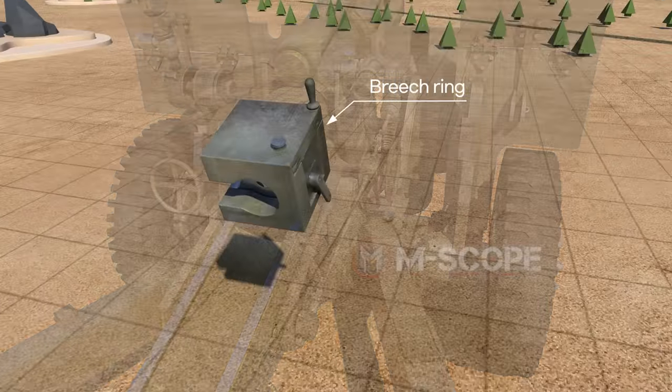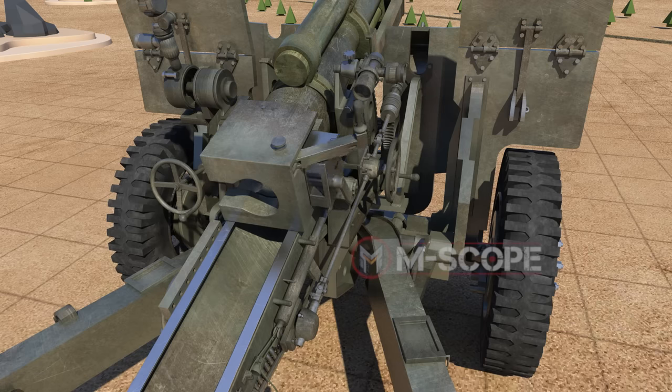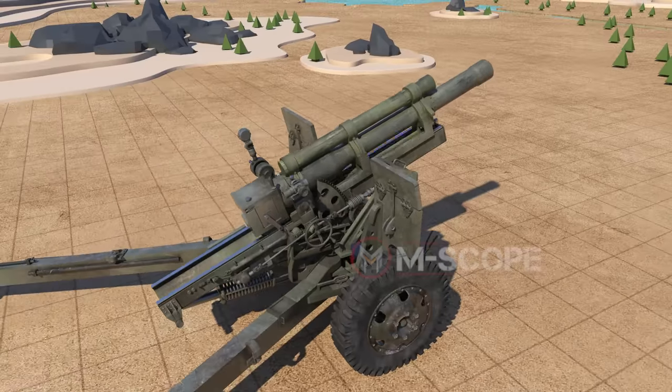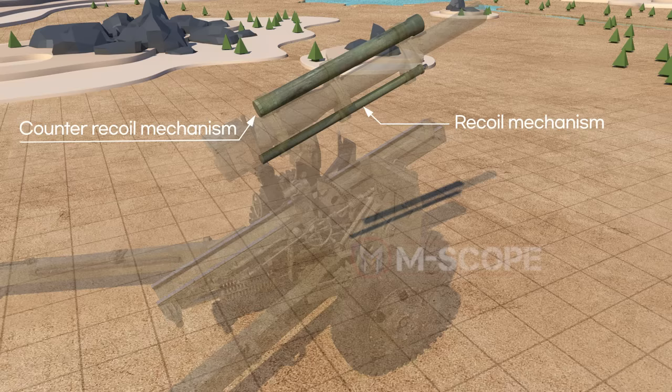At the rear part of the cannon tube is a square-shaped breech ring in which an obturator and a firing mechanism lie. A recoil mechanism and a counter-recoil mechanism are attached to the cannon tube on the top and the bottom, respectively.